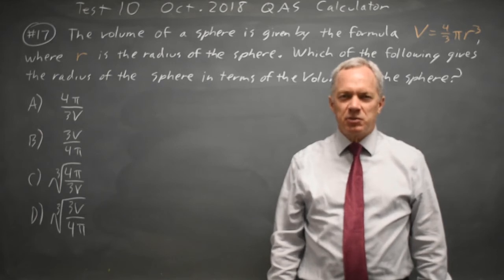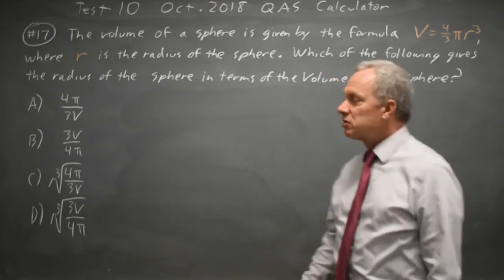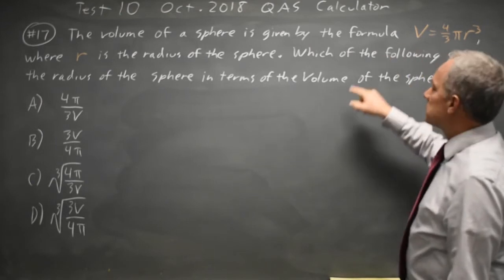This is question 17. College Board gives us a formula for v in terms of r, and they ask us to solve for r.